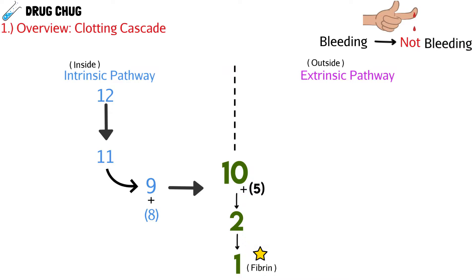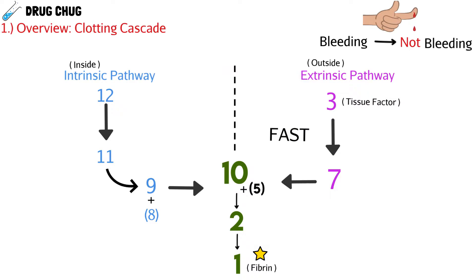The extrinsic pathway — damage like a paper cut to the skin — only has to go through clotting factor 3 to activate clotting factor 7, then straight to clotting factor 10 with the help of 5, then clotting factor 2, and finally clotting factor 1, which is fibrin. This outside pathway is a lot faster than the intrinsic pathway because there are fewer clotting factors — and it makes sense, because if you have a severe cut you want it to scab over quickly.